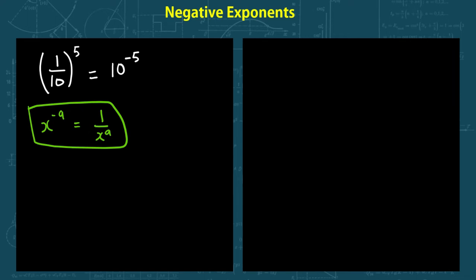Let's start with the first example. What is 2 to the power of negative 3? This is basically 1 over 2 to the power of 3 — that's it, you're done. What is 2 to the power of negative 4? It's equal to 1 over 2 to the power of 4.